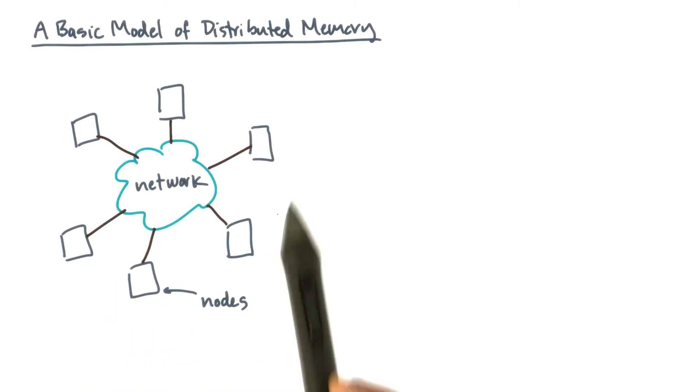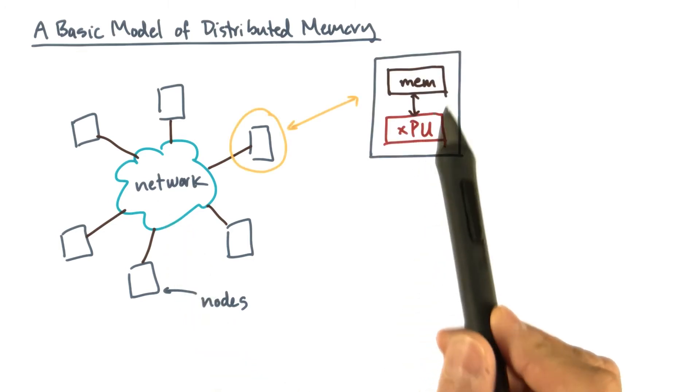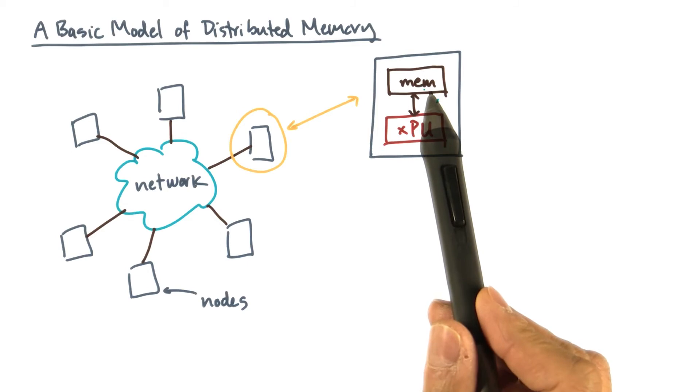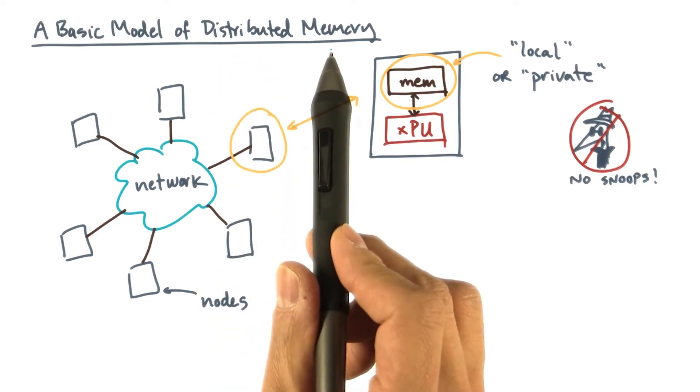In this model, a machine is a collection of nodes connected by some kind of network. Each node consists of a processor connected to a private memory. By private, I mean that the node can only directly read or write its own memory. It can't directly access the memory of other nodes. I'll refer to this type of machine as a distributed memory machine.